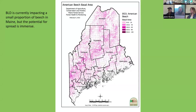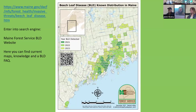Speaking of distribution, this is the beech resource in Maine — the pink areas are based on forest inventory data. We have quite a lot of beech trees in the state with both economic and ecological value. The current distribution map in Maine shows towns color-coded by the year they were confirmed. This is on our beech leaf disease Maine Forest Service website, which I try to keep updated. I was on the national beech leaf disease research meeting yesterday and try to stay current on that website.